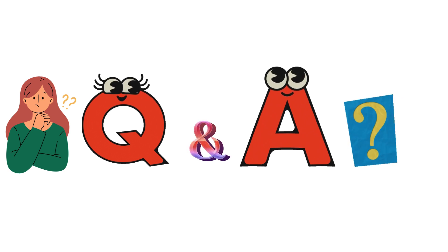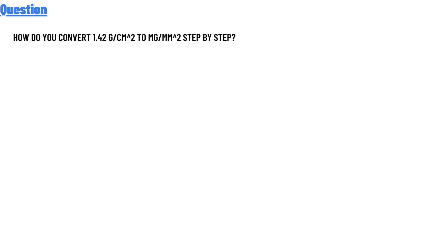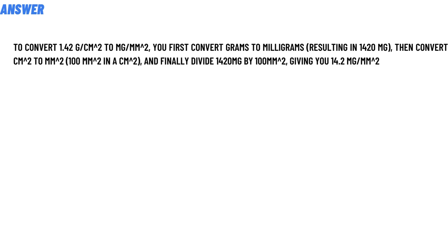Our today's question is: how do you convert 1.42 g/cm² to mg/mm² step by step? The correct answer of the question — to convert 1.42 g/cm² to mg/mm² — your first step is to convert grams to milligrams.